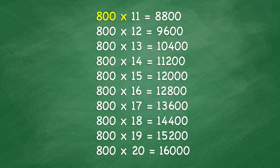800 times 11 equals 8,800. 800 times 12 equals 9,600. 800 times 13 equals 10,400.